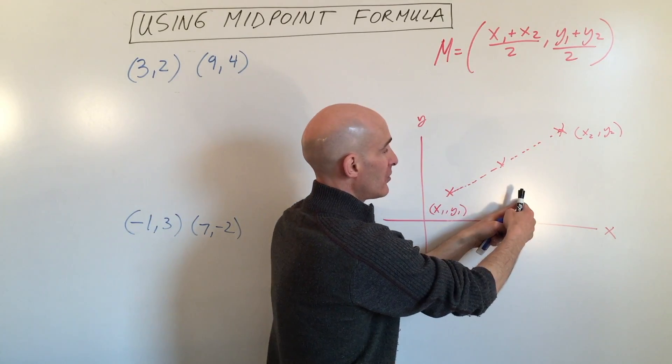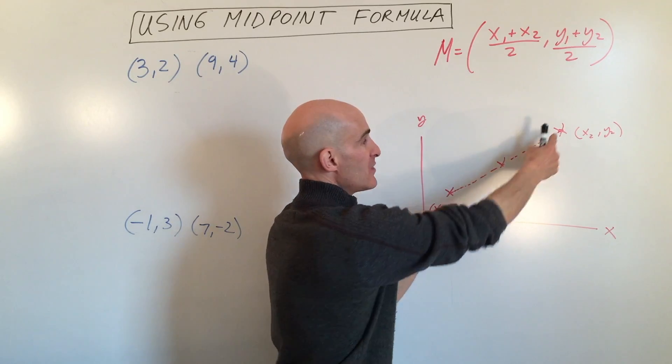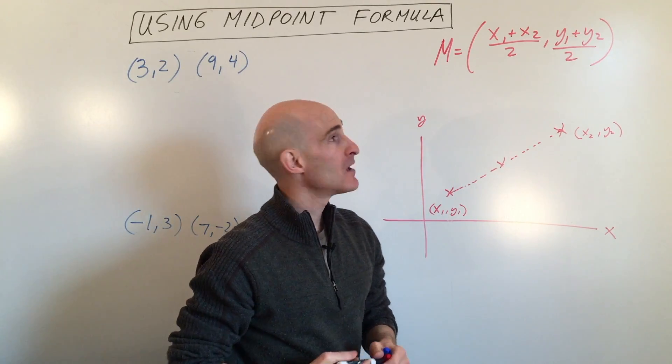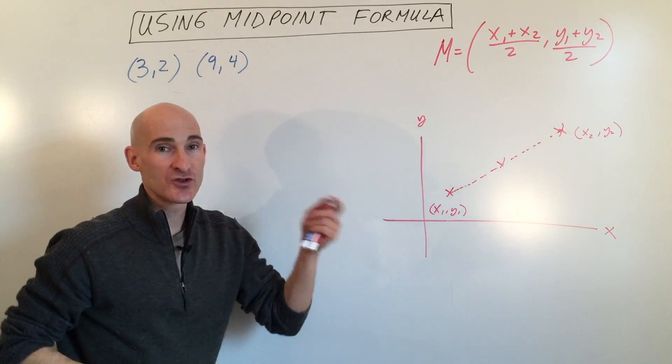And so if you find the middle horizontally and vertically, you're getting that midpoint in between those two points. So what we're going to do now is we're going to do a couple examples.